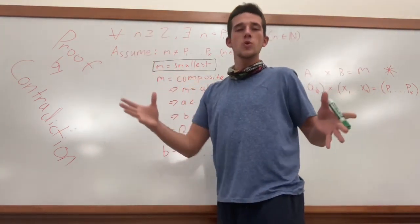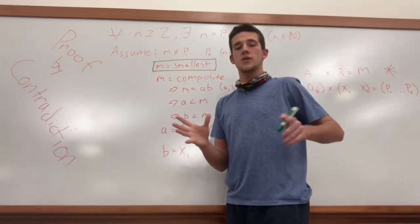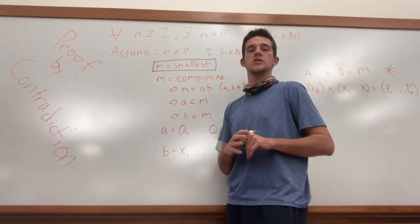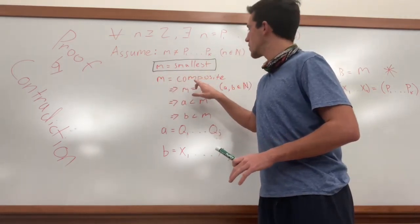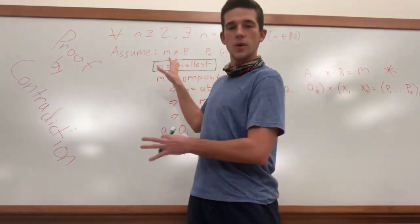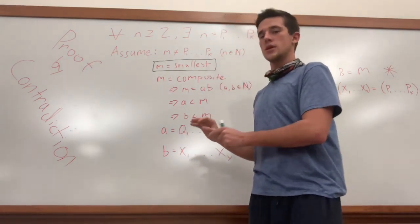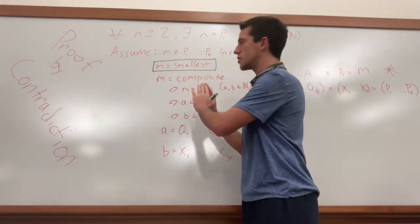So for this group of numbers that we'll assume, hypothetically, do not have a representation of a product of primes, we'll say that m is the smallest of that group of numbers. This is very important. Please remember that m is the smallest of this group of numbers. It comes into serious importance later in the proof.